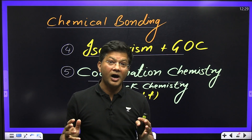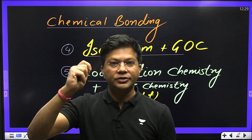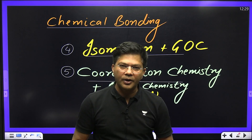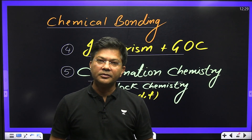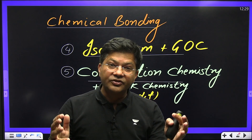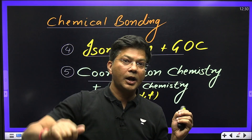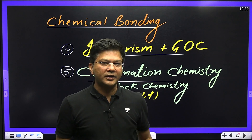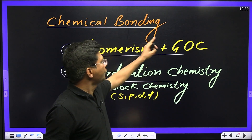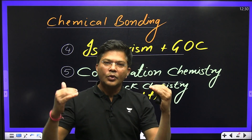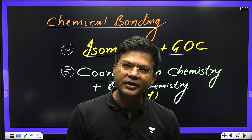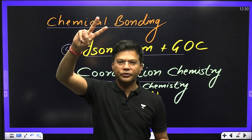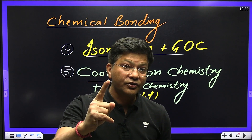Once you have very good command on inductive effect, hyperconjugation, and resonance, you can apply all three effects to identify stability of carbocation, carbanion, free radical, aromaticity, anti-aromaticity, and acidic and basic strength — all five things you can cover with RHI: resonance, hyperconjugation, inductive effect. You get command on this through GOC, and GOC comes from chemical bonding, which starts with atomic structure and the periodic table.